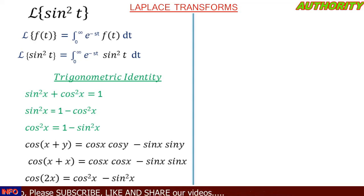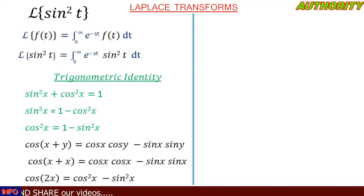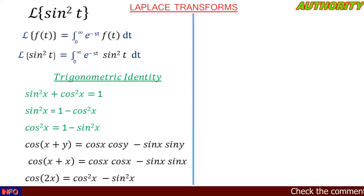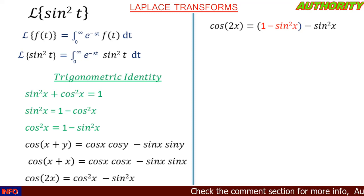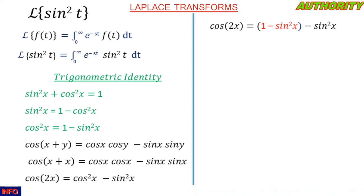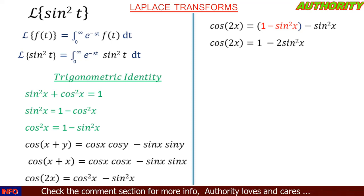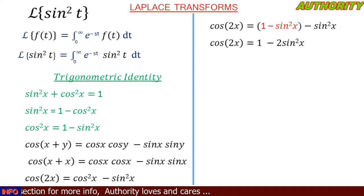We are looking for another expression for sin²t. We replace cos²x with its equivalent 1 − sin²x. So cos 2x = (1 − sin²x) − sin²x, which gives cos 2x = 1 − 2sin²x.